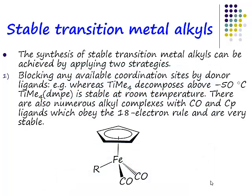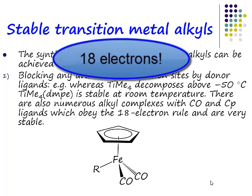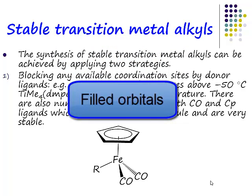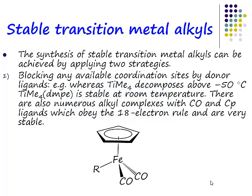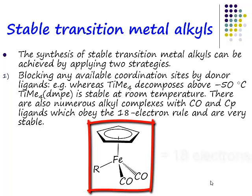How can one avoid that happening? There are two or more strategies. One strategy is to essentially go to 18 electrons. If you go to a transition metal alkyl complex that has 18 electrons, what you've done is said all the orbitals are filled. If all the orbitals are filled with electrons, there's no way that the alkyl group can come round in a beta-agostic interaction and bind to the transition metal centre. A complex like this is an 18-electron complex and it's perfectly stable.